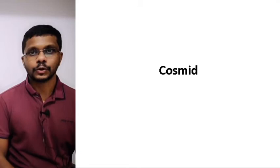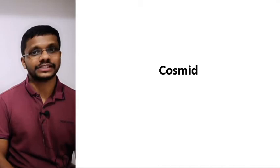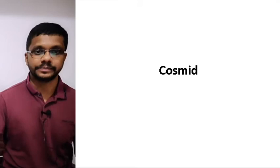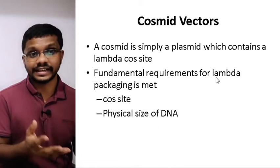Here we have the cosmid vectors. Cosmid vectors are a combination of plasmid and bacteriophage lambda. The cosmid vectors have the cos site from the lambda phage, as well as the origin of replication, selection genes, and everything else from the plasmid. That's why it's named cosmid — cos site plus plasmid. So cosmid vectors are simply plasmids which contain the lambda cos site.